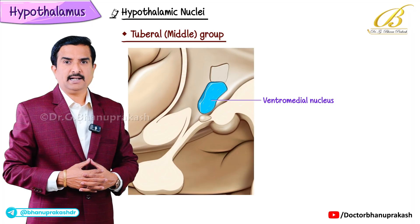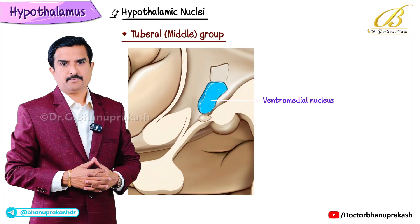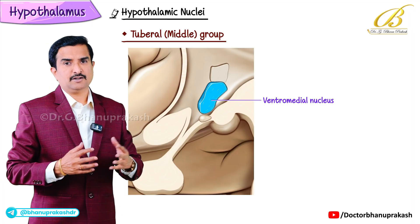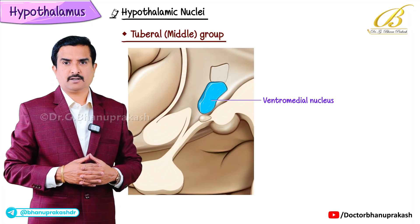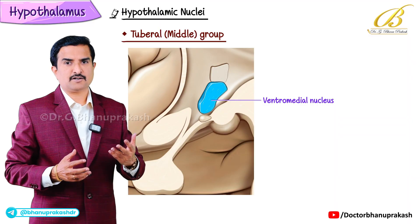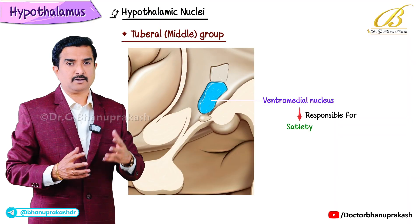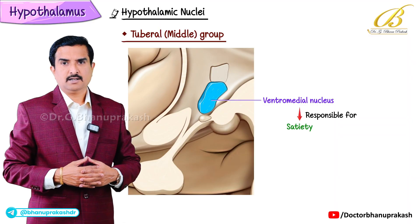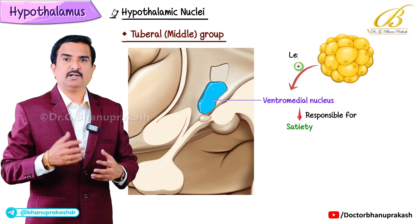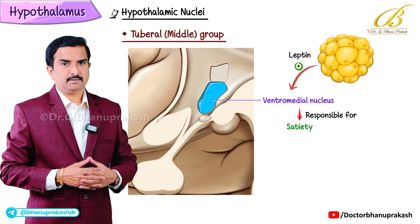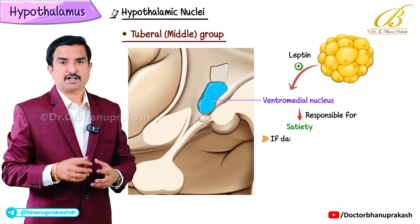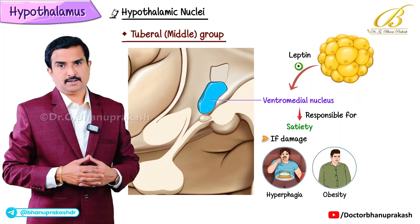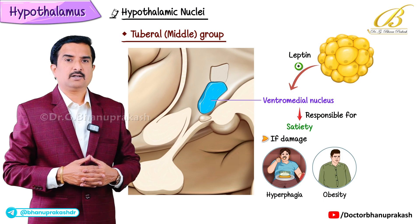The next nucleus is the ventromedial nucleus, which is very famous for its role in satiety. It is stimulated by leptin. If destroyed, it can cause hyperphagia and obesity.